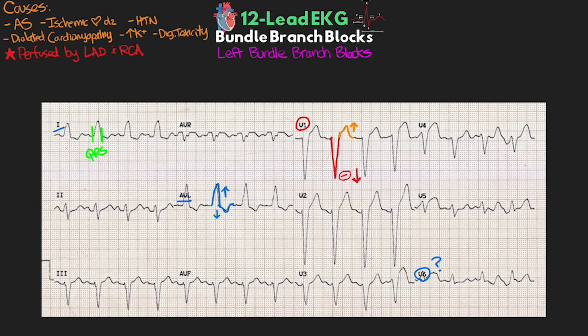Those are our bundle branch blocks and the basics of what's going on with them. When you think about the lead placements, it makes sense how these changes manifest on our 12-lead EKG. The general approach is: do we have a wide QRS? If so, do we have a bundle branch present based on the morphology in V1, along with the opposite taking place in the lateral leads? I hope I was able to explain this so you can carry it forward and determine if you have right or left bundle branch blocks.